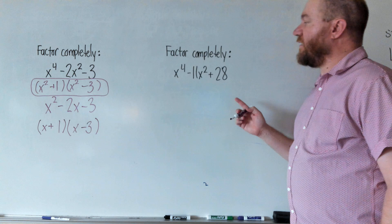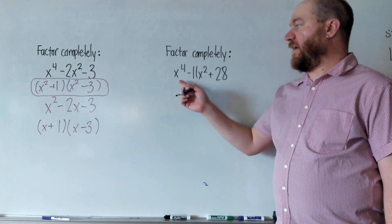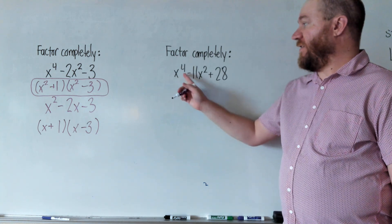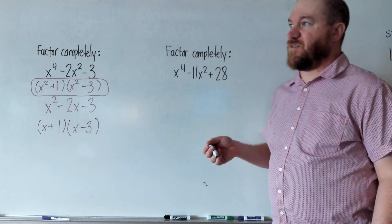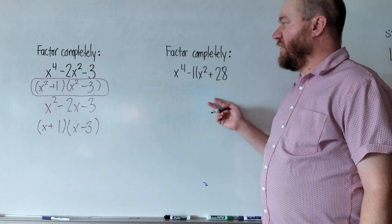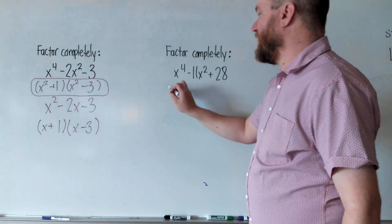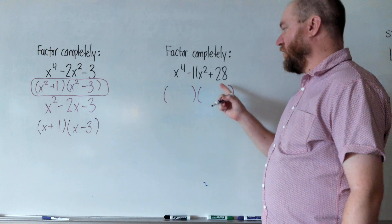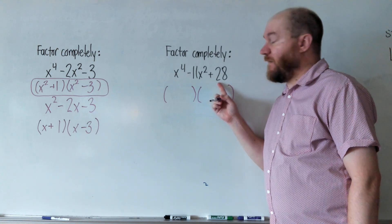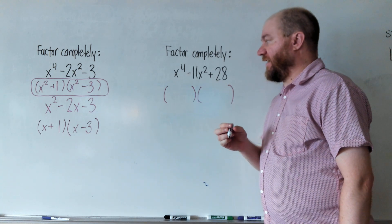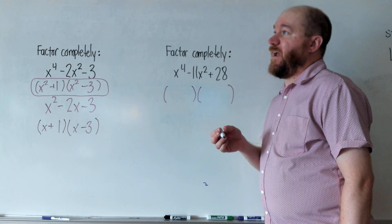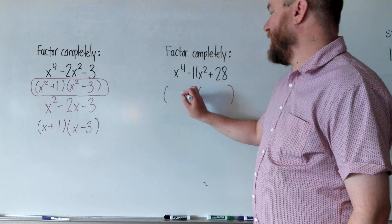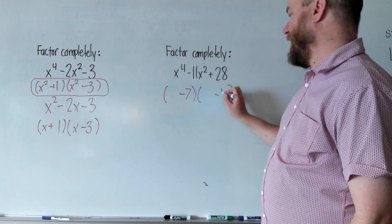So one more example here, again, it's in the same format. It's a trinomial, and this exponent is double that. So I can use just the normal factoring a trinomial method where a is 1. I can just say to myself, hey, I need two numbers that multiply to 28 that add up to negative 11. So numbers that multiply to 28 and add up to negative 11 would be negative 7 and negative 4.